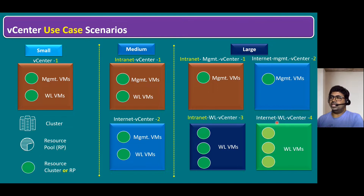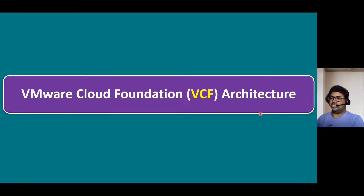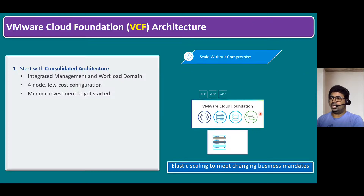The same scenario applies for VMware Cloud Foundation as well. VMware Cloud Foundation, VCF, has two architectural models. One is consolidated — like a small infrastructure size — where everything is configured within one consolidated architecture. The other is standard architecture, which splits management and workload into multiple domains instead of configuring everything in one vCenter.